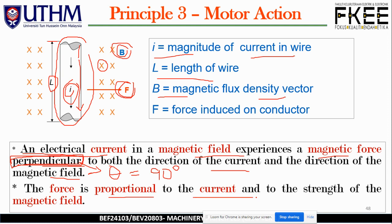The force is proportional to the current and to the strength of the magnetic field. In order to have a greater force or motion, you need a high flux density as well as a high amount of current. These two parameters affect the performance of the force or motion.